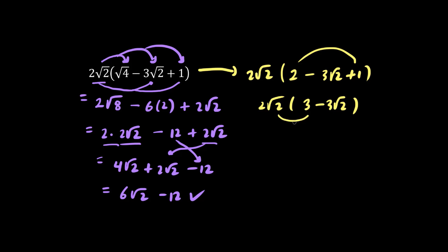Let's feed the dog, feed the cat, use the distribution. 2 root 2 times 3 is 2 times 3 is 6 root 2. And a positive number times a negative number is negative. 2 times 3 is 6. And root 2 times root 2 is just 2. So the final answer is 6 root 2 minus 12. Same answer.